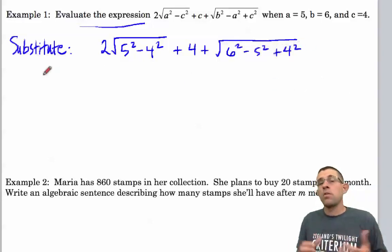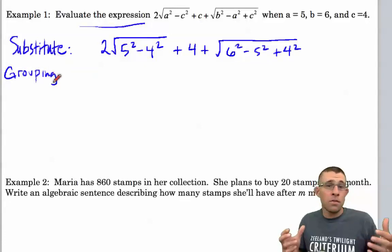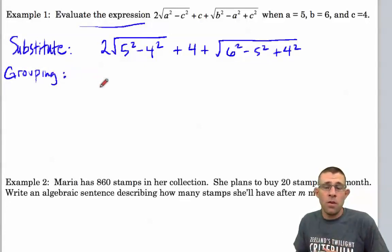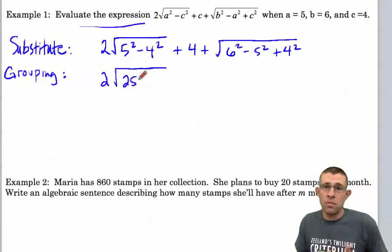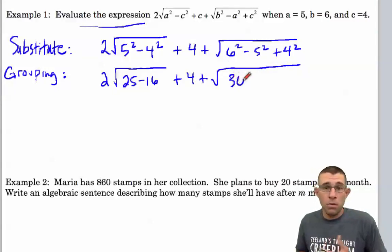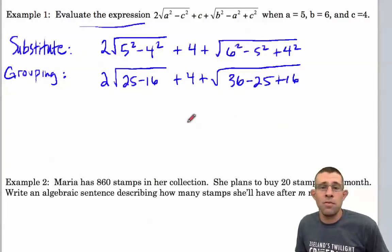All right, now we're going to follow our order of operations. Since we don't have any set of parentheses, but we do have a grouping symbol, that square root, we're going to handle those exponents inside of our grouping symbols first. So we're going to simplify 2 times the square root of 25 minus 16 plus 4 plus the square root of 36 minus 25 plus 16.